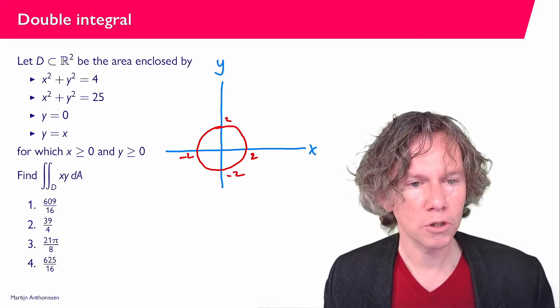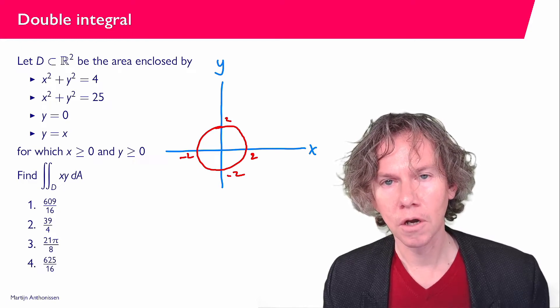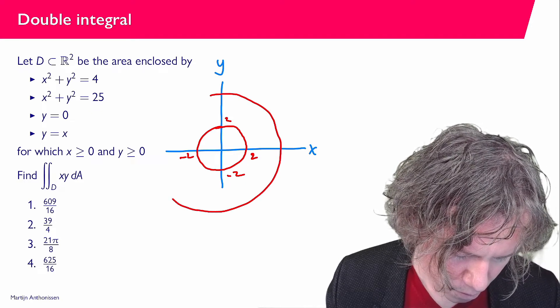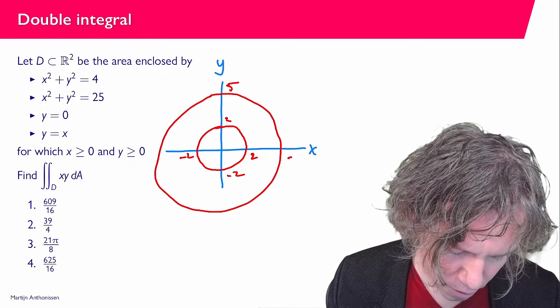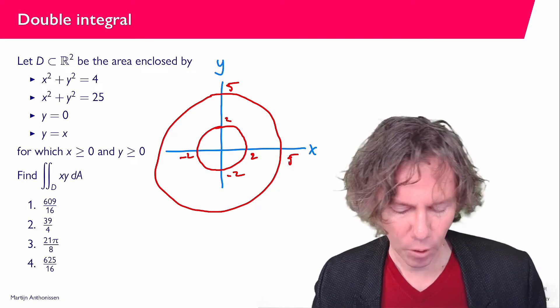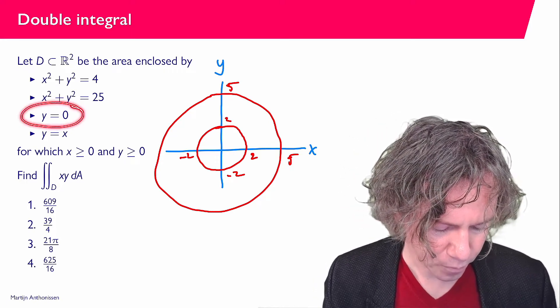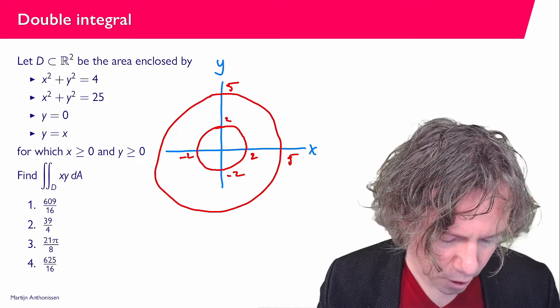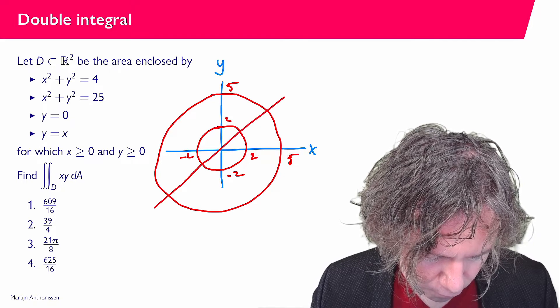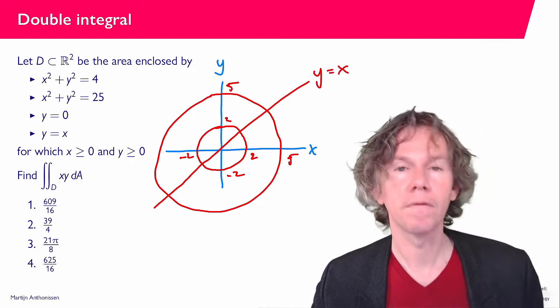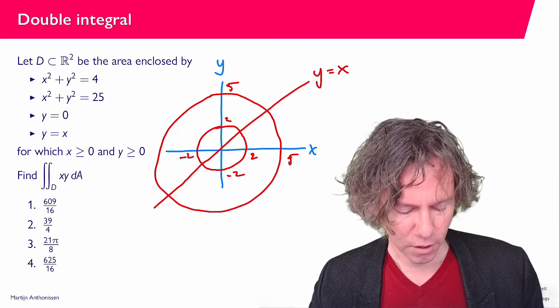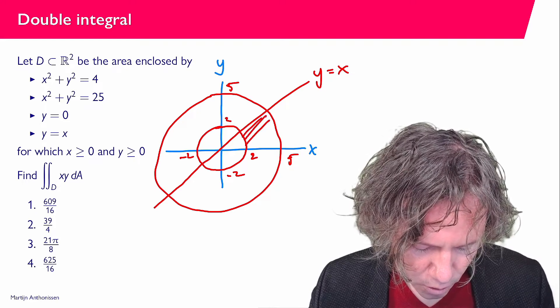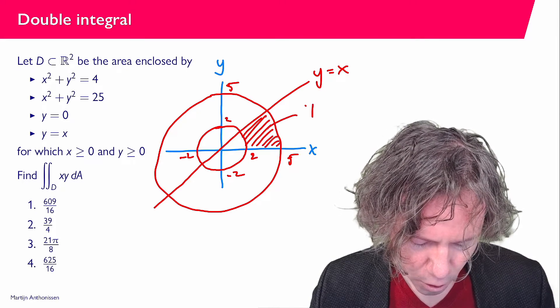The next is X squared plus Y squared equals 25. Again this is a circle with center in the origin and radius 5. So a larger circle intersecting the axis at 5 and minus 5. Y equals 0, that is of course here the horizontal axis. And Y equals X. So I still need to draw the line Y equals X. That makes a 45 degree angle with the positive X axis. And then we have that both X and Y are non-negative. So if you put that all together then what we have is this region here. So this is our region D.